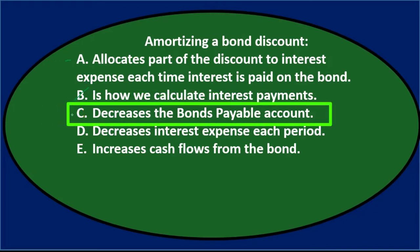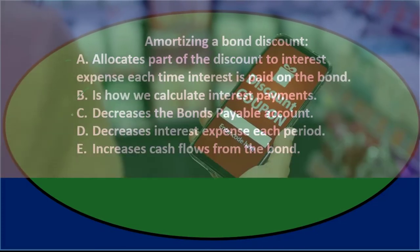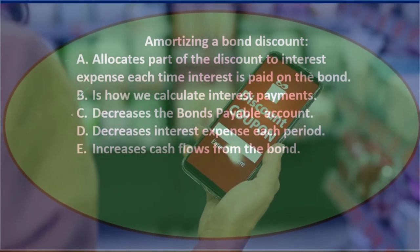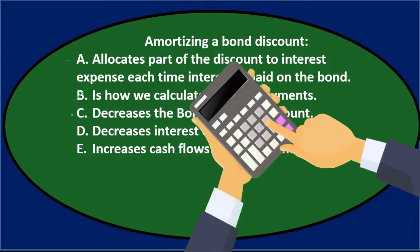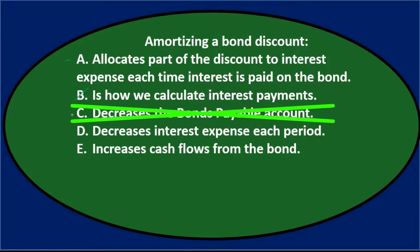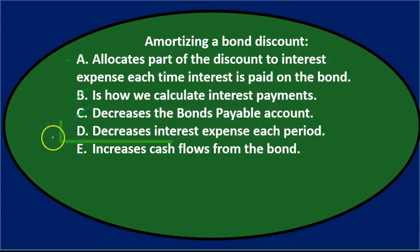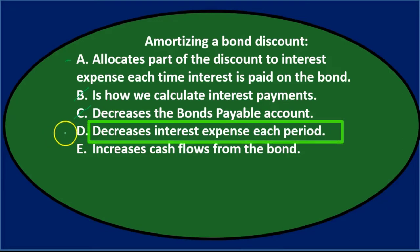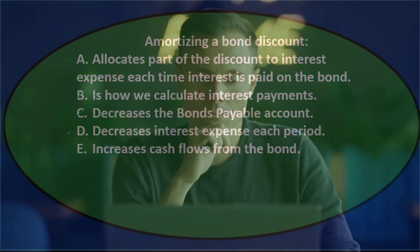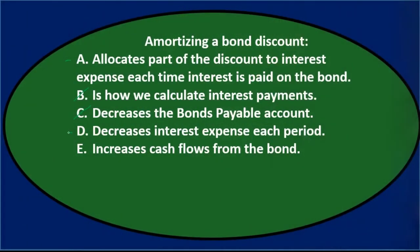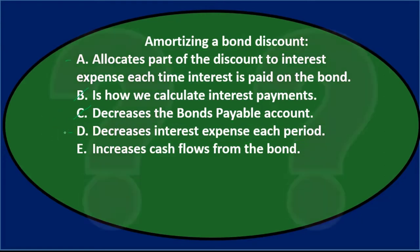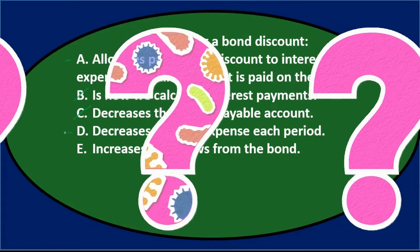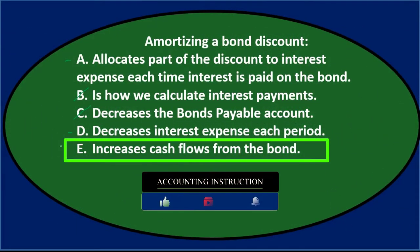C says decreases the bond payable account — the discount doesn't directly affect the bond payable account; they're linked together because you subtract the two to get the carrying amount of the bond, but the discount is not part of the payable account itself, so it's not C. D says decreases interest expense each period — that could get confusing, so I'll hold on to that. If A is true and D is true, something is happening to interest expense — the question is whether it's decreasing or increasing.